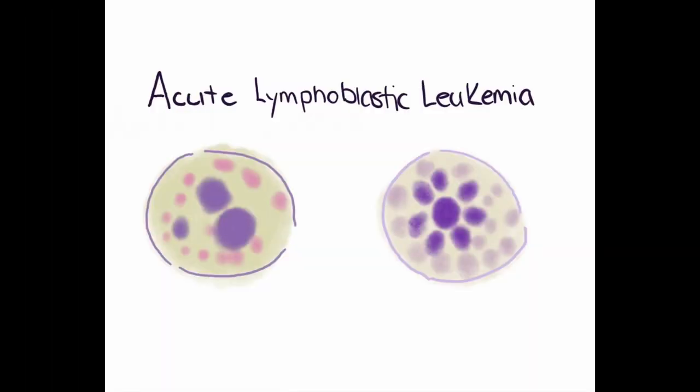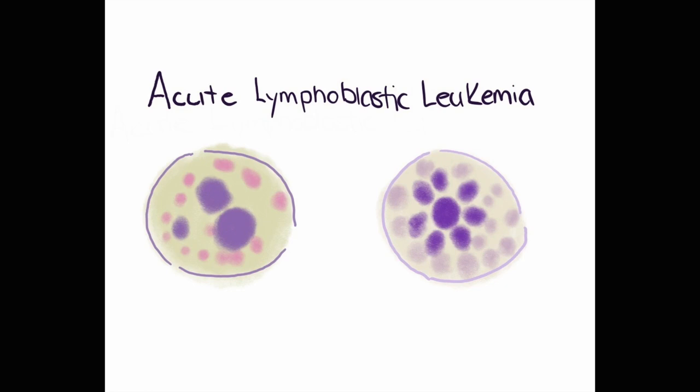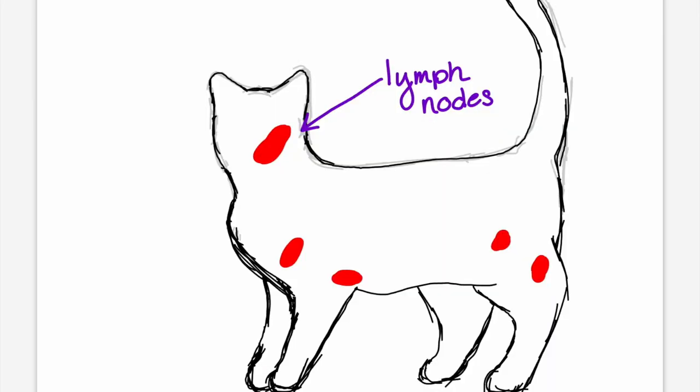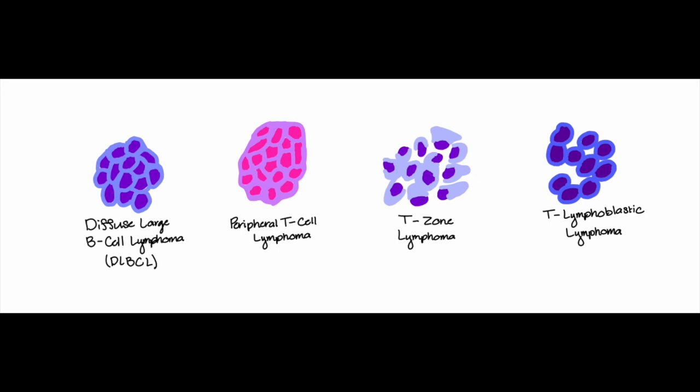Acute lymphoblastic leukemia starts in the bone marrow. From there, ALL can progress and move on to lymph nodes and other lymphatic organs. The neoplastic cells can be of T cell or B cell origin. The average survival time for animals after being diagnosed with ALL is less than 4 months.